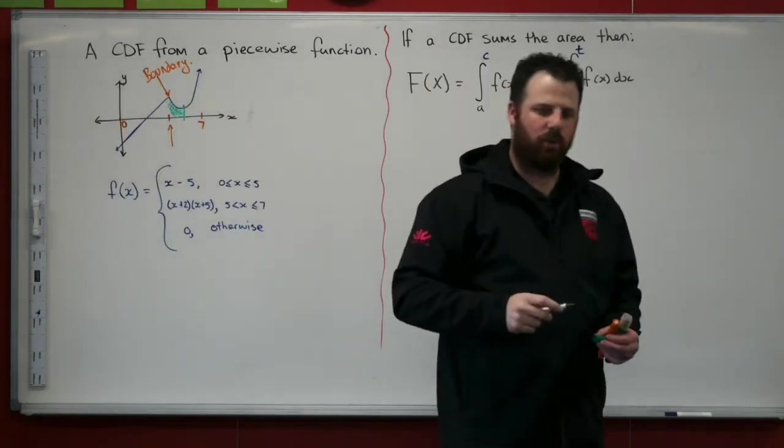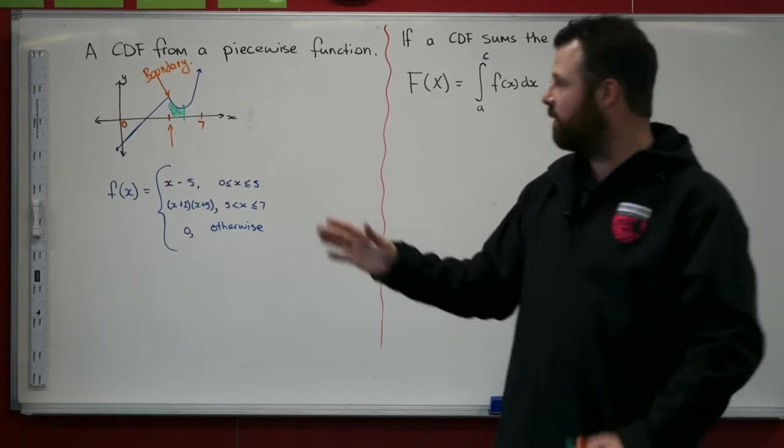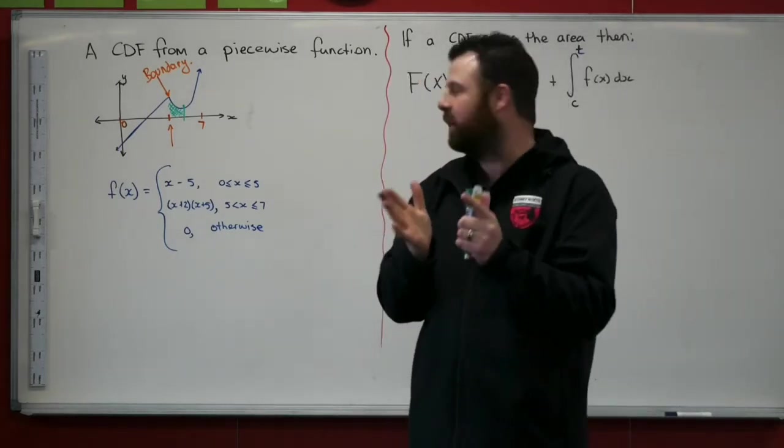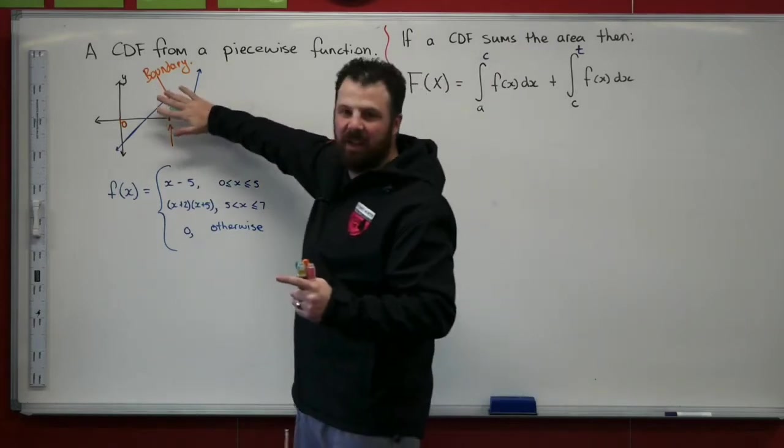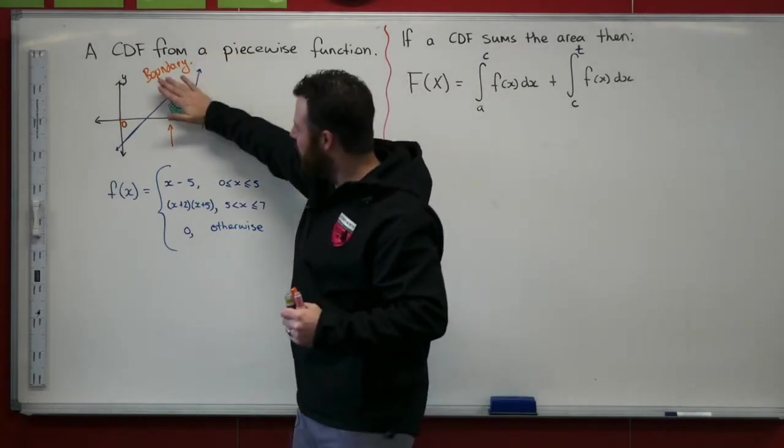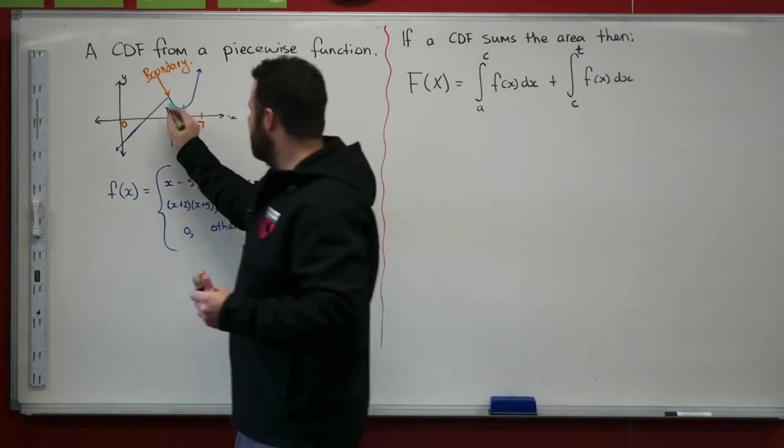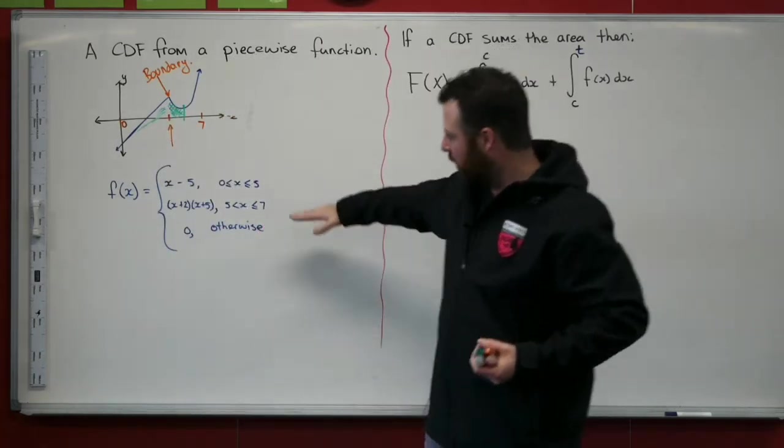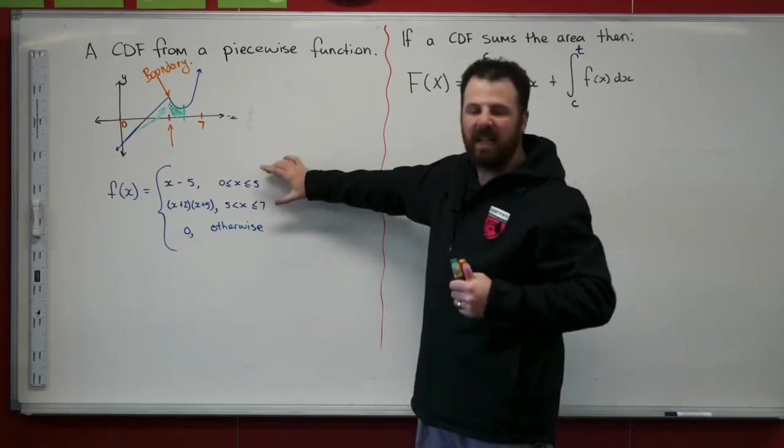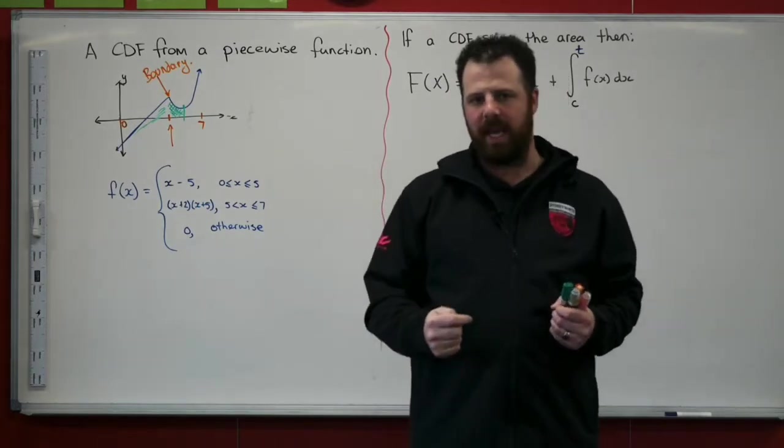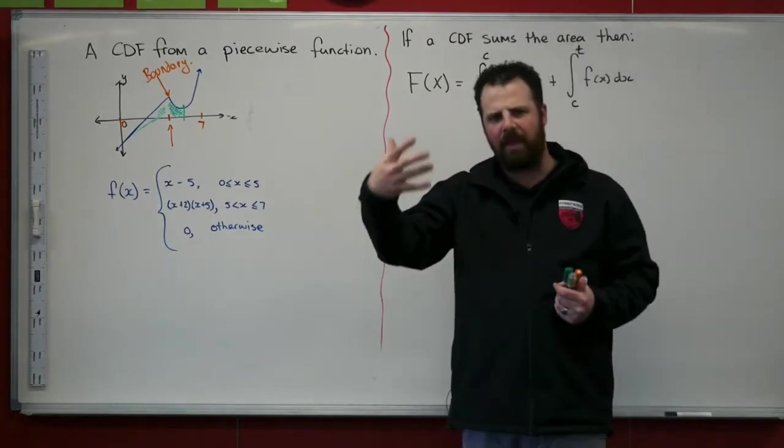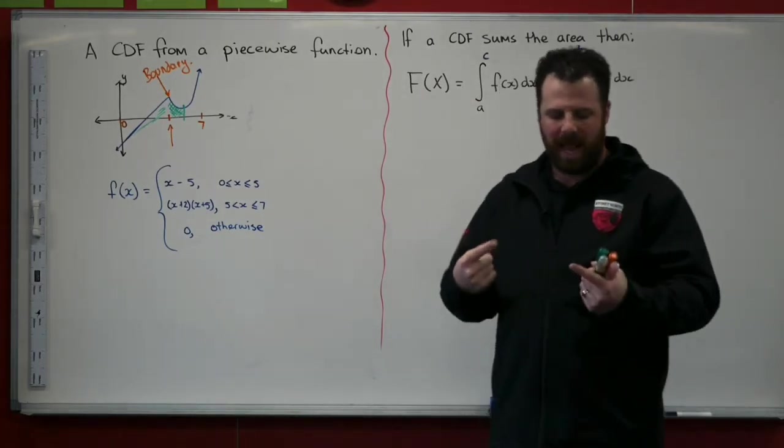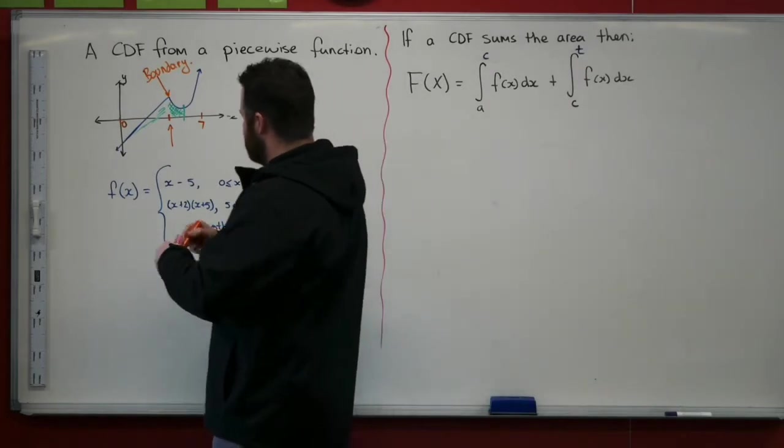But what happens if that's my value there that I want to find the area of? To find its area, I need to calculate some small section underneath that quadratic curve. I need to have some small section plus everything else that happened in that first one. I've got to have some part of this plus everything that happens there.